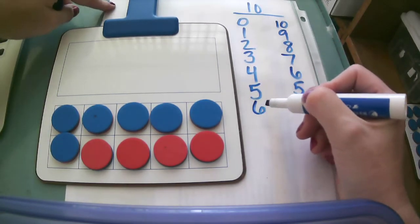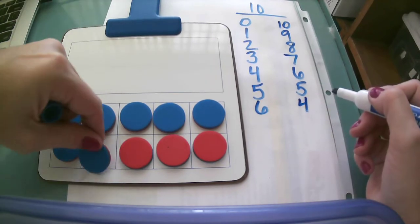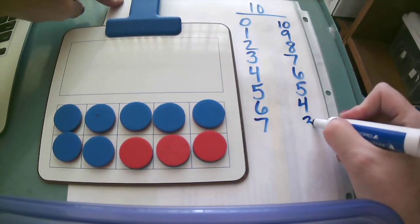I'm gonna continue with my pattern. Six and one, two, three, four reds. And now I have seven blues and three reds.